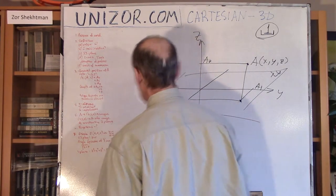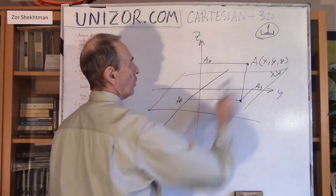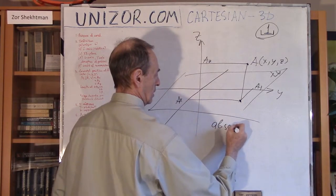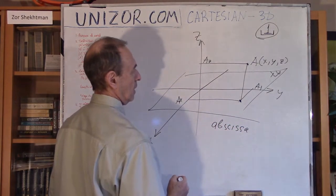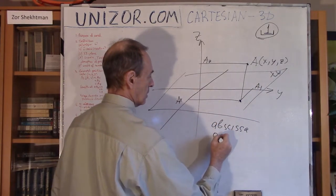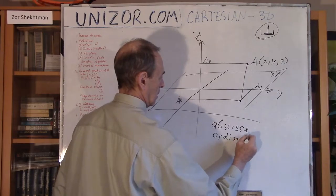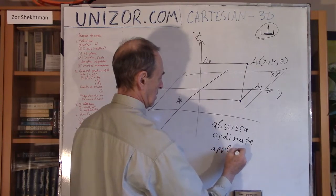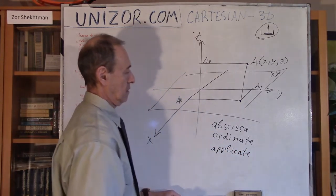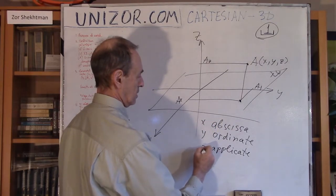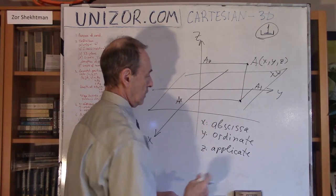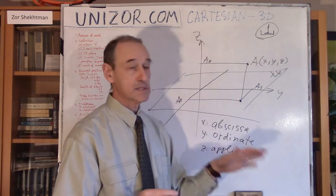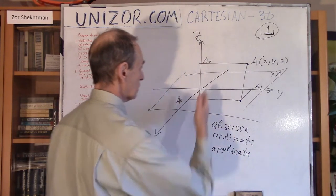What have I not covered? The names. The x-coordinate is called the abscissa, the y-coordinate is called the ordinate, and the z-coordinate is called the applicate. So if somebody says abscissa such-and-such, ordinate such-and-such, applicate such-and-such, it means the x, y, and z coordinates in a Cartesian system.